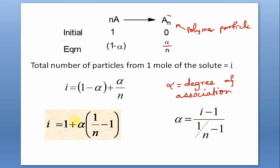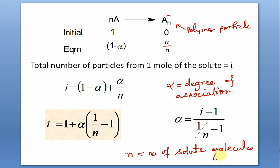For dimer n = 2, for tetramer n = 4, and so on. Now let us solve some problems.